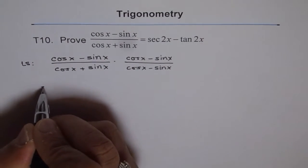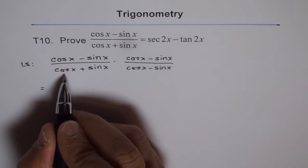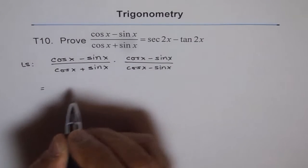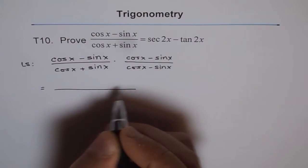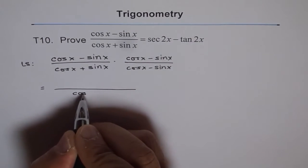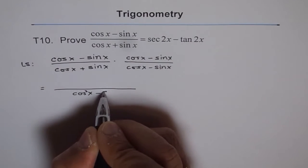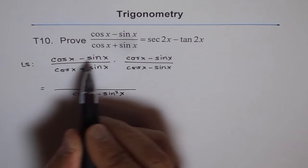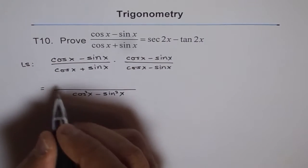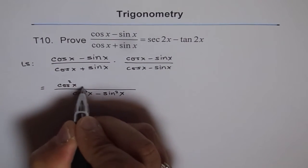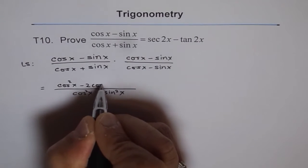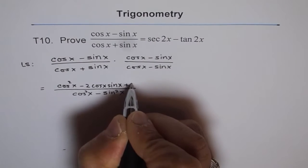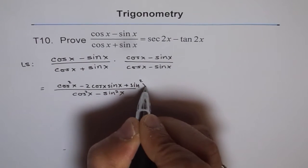Now this is equal to a plus b times a minus b gives you a square minus b square. So we get here cos square x minus sine square x. And on the top, we got a minus b whole square. That gives you cos square x minus 2 times cos x sine x plus sine square x.